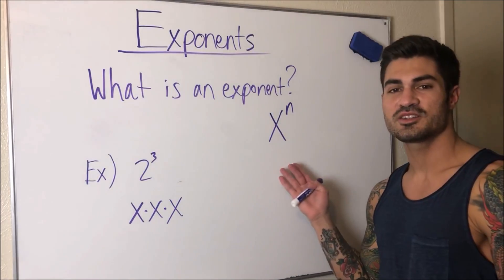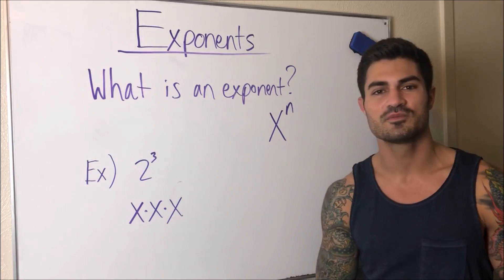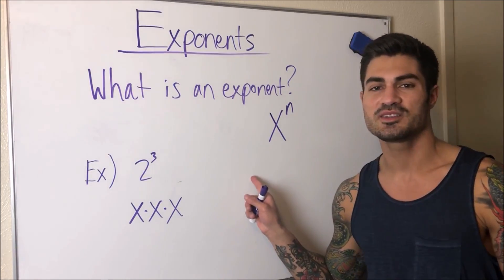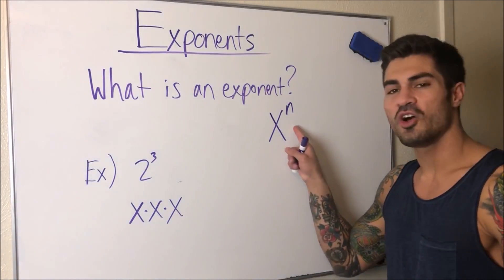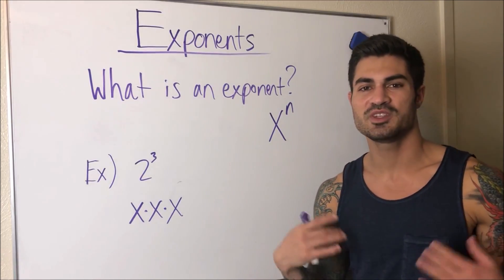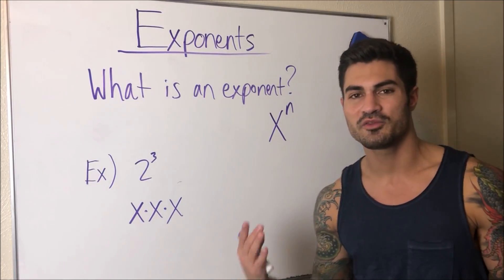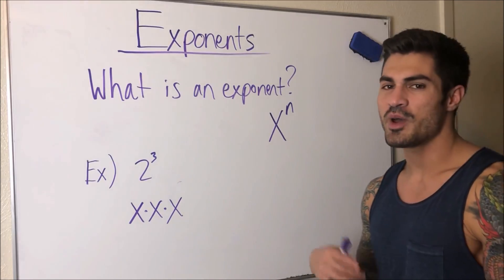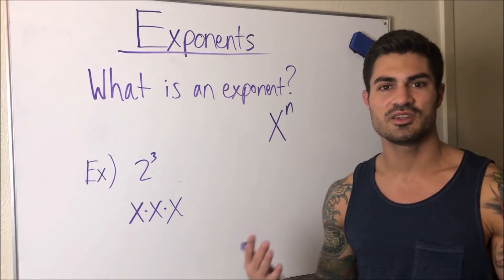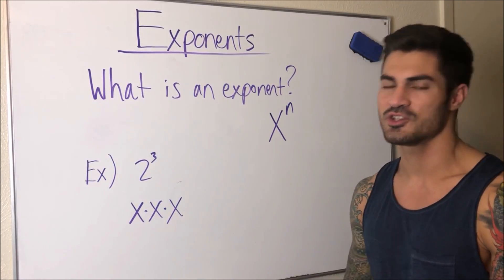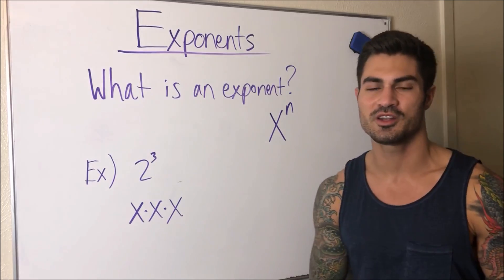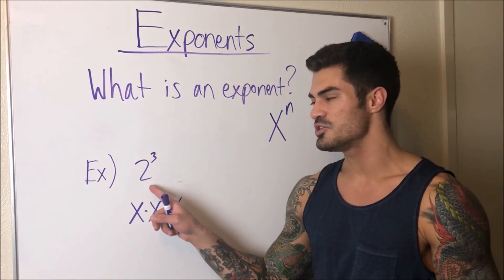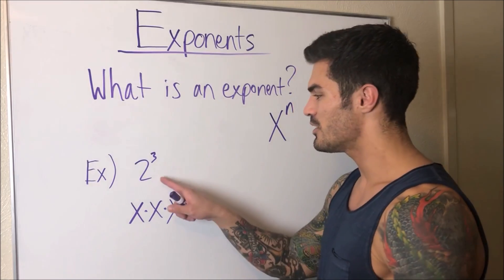In general terms, an exponent is usually expressed like X to the n. We call X the base and we call n the exponent. How you'd read this out loud is 'X to the n power,' so 'power' is basically interchangeable with 'exponent' — it's just another word and it's more commonly used.